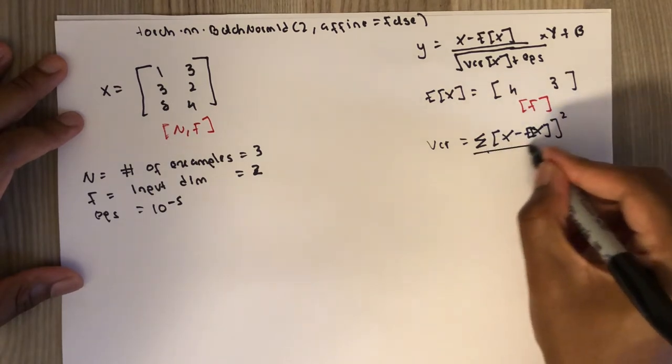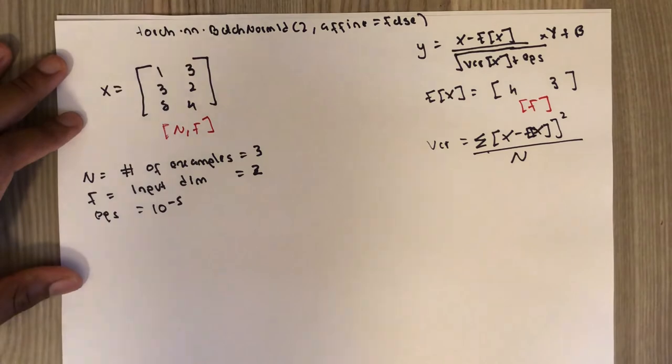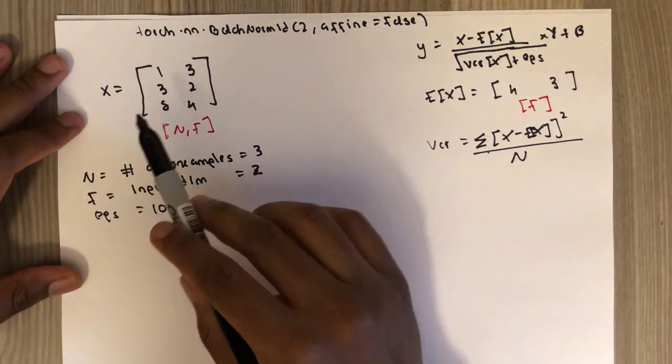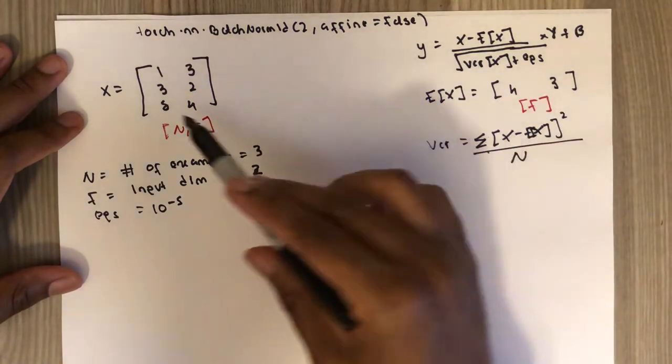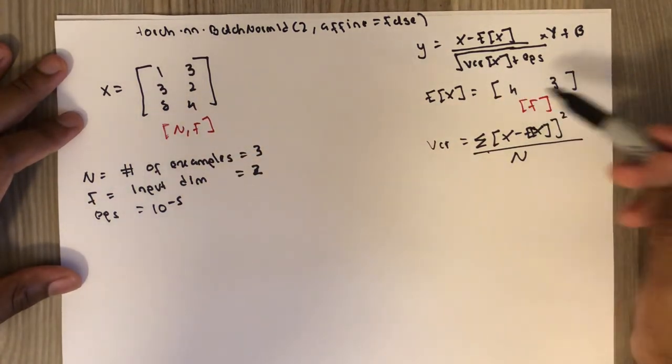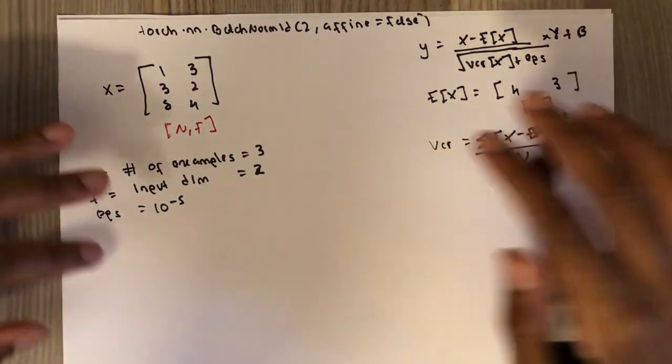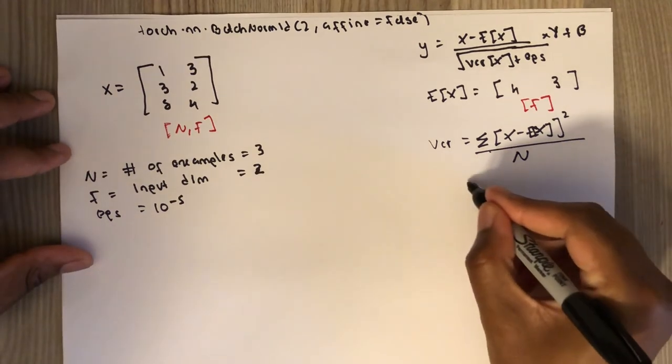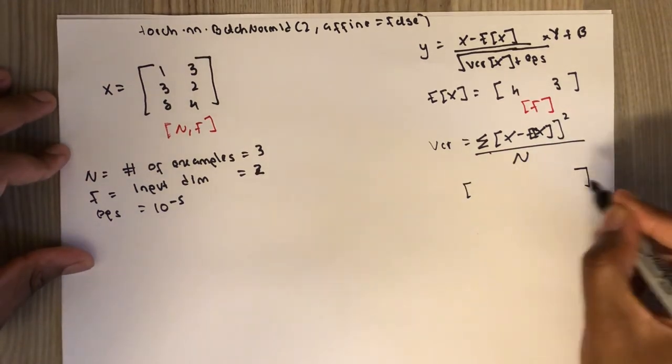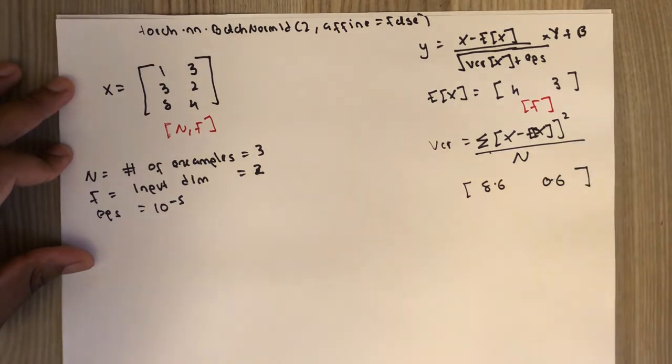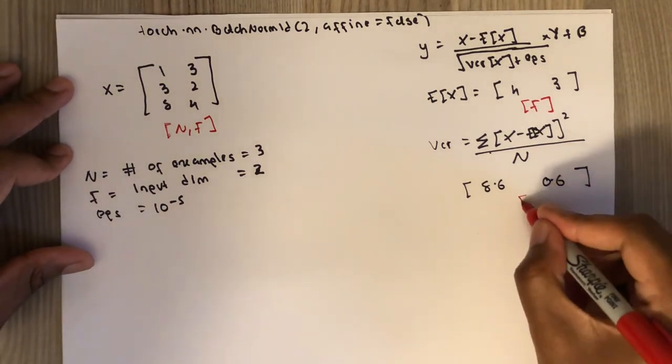X squared divided by N. So it means for each of the training examples, subtract the expected value, then square it, then divide by N. The variance I've calculated it to be 8.6 and 0.6, and the dimension is F.